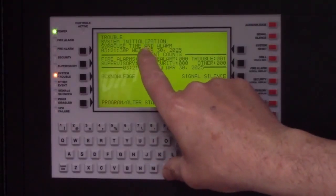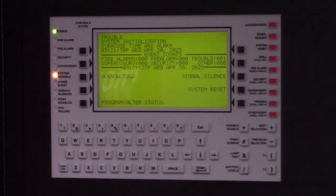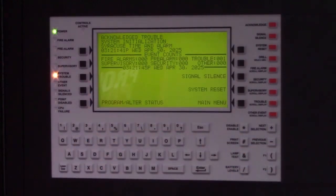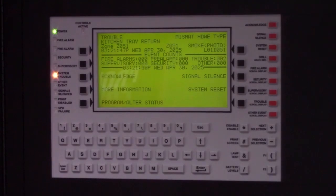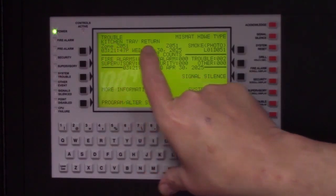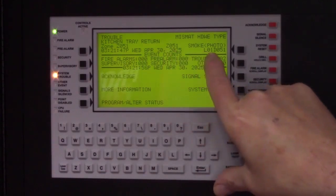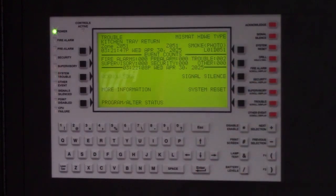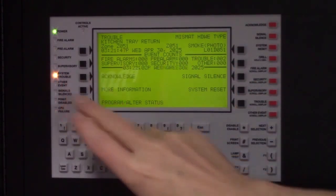After replacing it, it is going to initialize and the lights will remain lit. When it is done initializing, you will see that it is indicating a trouble on that address. Showing loop 1 detector 51 is a hardware mismatch type because we have not added the program yet to change it to a heat detector.